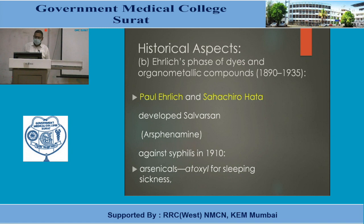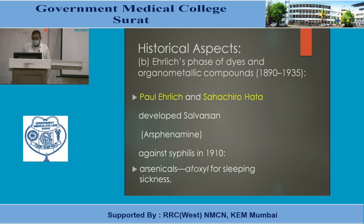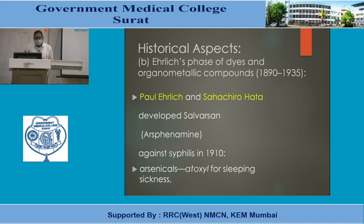The second phase is the Ehrlich phase of dyes and organometallic compounds, from 1890 to 1935. Ehrlich and Hata developed salvarsan — arsphenamine and neoarsphenamine — for the treatment of syphilis, and arsenicals like atoxyl for sleeping sickness. Dyes selectively stain microorganisms, which led to the idea that certain chemicals could selectively act on microorganisms as well.